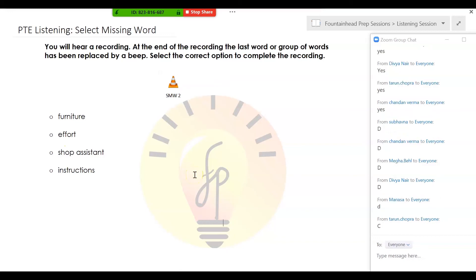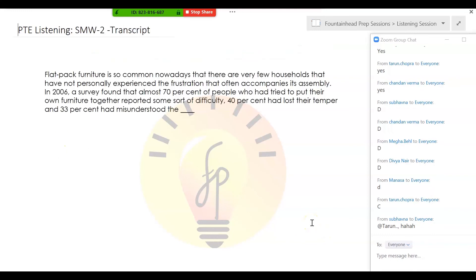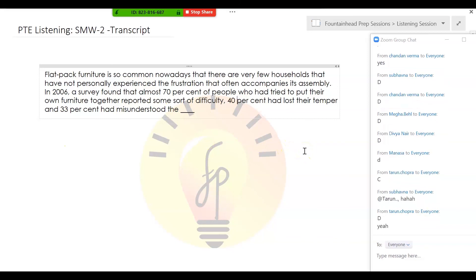I knew that someone will spoil this party. Do you know what I mean? Alright. So the correct answer is D. I'll show you the transcript again. So it's talking about the difficulties that these people face when assembling the flat-packed furniture. 70% of people who had tried to put their own furniture together reported some sort of difficulty. 40% had lost their temper and 33% had misunderstood the instructions. Alright. Good. Super. I think most of you got this correct.